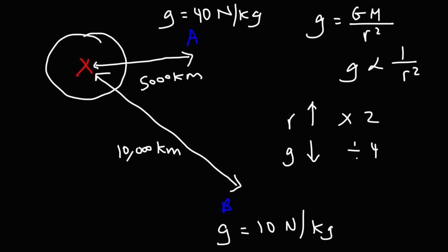So that's how you can calculate the gravitational field strength at some distance without knowing the mass of the planet. If you know the gravitational field strength at point A and how far you are from the center, you can use that to calculate the gravitational field strength at point B.